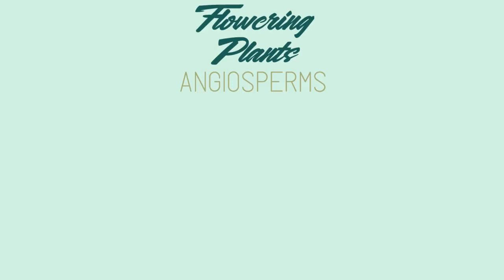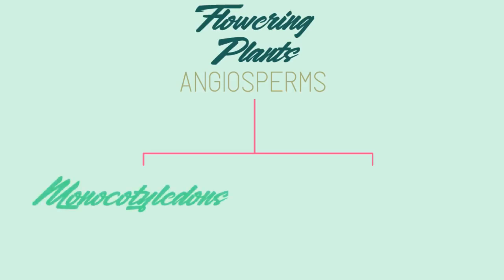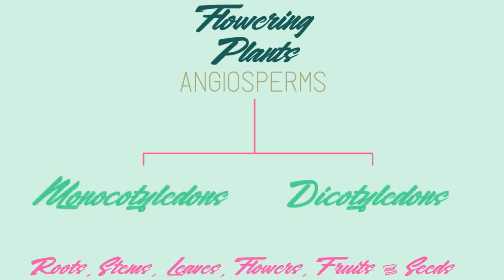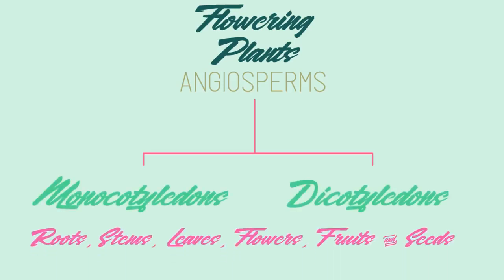Now for angiosperms — the largest and the most diverse group in the plant kingdom. Angiosperms consist of two major groups: monocotyledons and dicotyledons. These groups differ with respect to their roots, stems, leaves, flowers, fruits, and seeds.